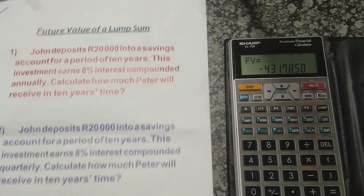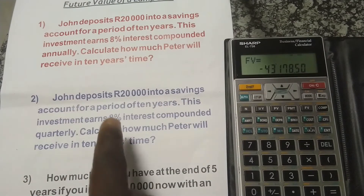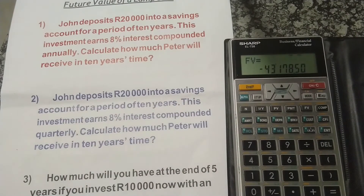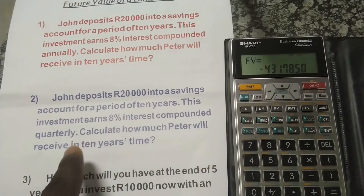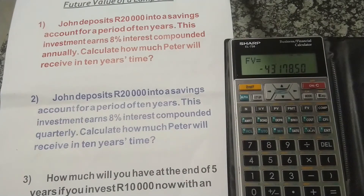Let's take a look at the second example. John deposits 20,000 rand into a savings account for a period of 10 years — the exact same scenario — but here this investment earns 8% interest compounded quarterly. We need to calculate how much he will receive in 10 years time. Because we have more than one compounding per period, this will affect both N and I/Y. We divide the interest rate by the number of compoundings per year, and we multiply the number of years by the number of compoundings per year.